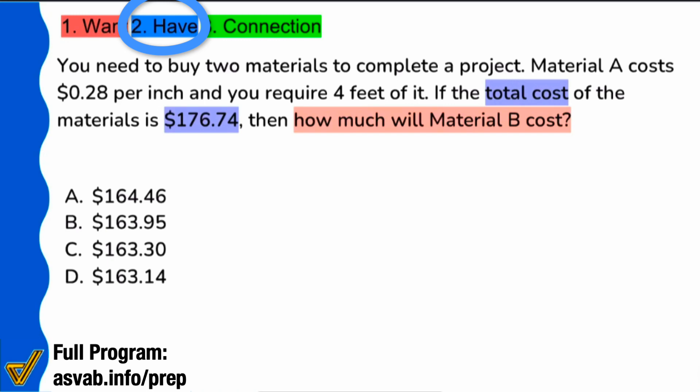This next part is where things really start coming together. When it says the total cost of the materials is $176.74, that's the biggest piece of information for us because we can make the simple statement: material A plus material B, the total cost would be $176.74. I hope that you agree with that.